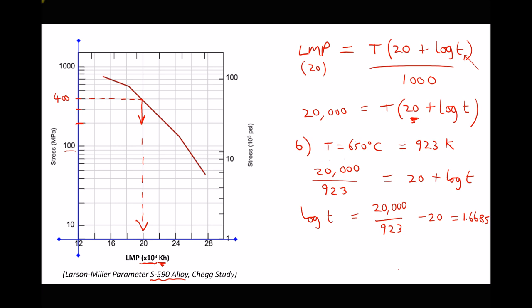Now hopefully you recall the inverse of log t, where log t is actually log to the base 10 of t, but the inverse is 10 to the power of. So if we take 10 to the power of log to base 10 of t, we'll just be left with t. And if we take 10 to the power of our right hand side, we'll get 10 to the power of 1.6685. Now that value equals 46.6 hours. So once again, what we see is a very small increase in temperature leads to a dramatic reduction in the amount of time the stress can be held for before rupture.